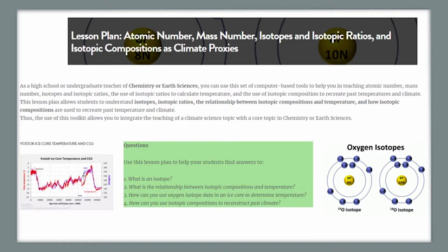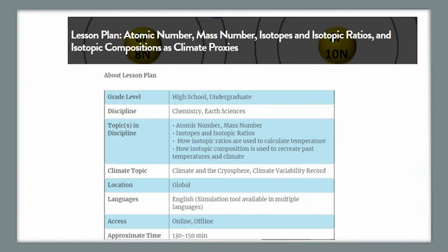The use of this lesson plan will allow you to integrate teaching of a core topic in chemistry — in this case atomic number and isotopes — with a topic in climate science. This lesson plan is aimed at both high school and undergraduate level and you may choose to adapt it to your situation and your students. The topics include atomic number, mass number, isotopes and isotopic ratios, and applications of isotopic compositions — specifically, how isotopic ratios can be used to calculate past temperature and recreate Earth's past climate.